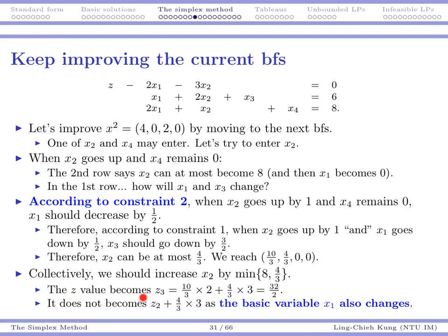And then we may calculate the z value. The z value here requires us to enter both variables, x1 and x2, into the objective value. Again, this is also somewhat weird because previously we have z2 which is 8. But when x2 goes up by this amount, we cannot just add that particular amount into z. That's not right.